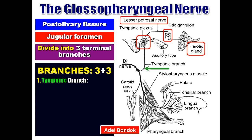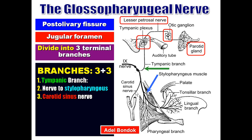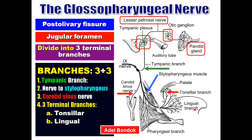The second branch is the motor branch to the stylopharyngeus muscle. The third branch is the carotid sinus nerve to the carotid sinus. The three terminal branches are: the tonsillar branch to the palatine tonsil, the lingual branch to the posterior third of the tongue, and the pharyngeal branch to the oropharynx.